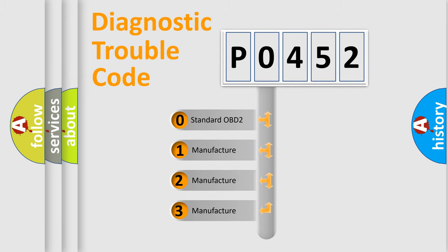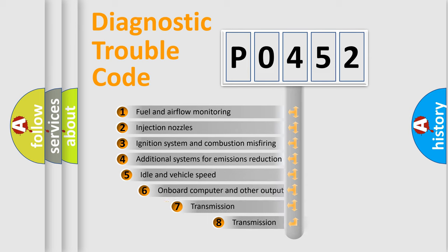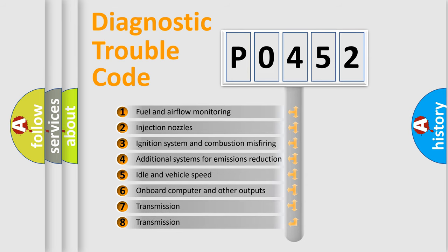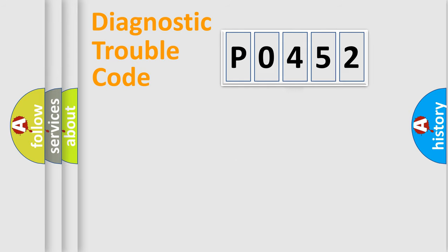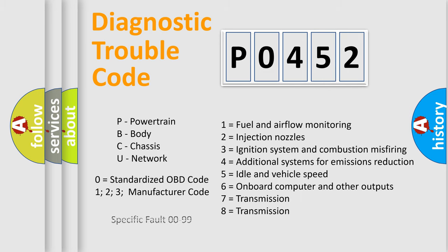If the second character is expressed as zero, it is a standardized error. In the case of numbers 1, 2, 3, it is a more prestigious expression of the car-specific error. The third character specifies a subset of errors. The distribution shown is valid only for the standardized DTC code. Only the last two characters define the specific fault of the group. Let's not forget that such a division is valid only if the other character code is expressed by the number zero.